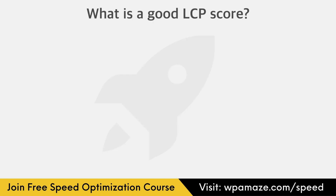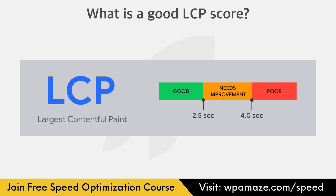What is a good LCP score? To provide a good user experience, Google recommends LCP to be less than 2.5 seconds for at least 75% of all page visits. Anything less than 2.5 seconds is considered good. 2.5 to 4 seconds needs improvement. Anything more than 4 seconds is considered poor. The 75th percentile of page loads is divided across mobile and desktop devices, and it's an excellent benchmark to ensure you're achieving this target for most visitors.